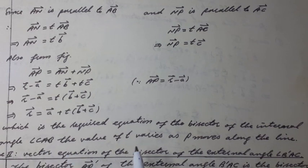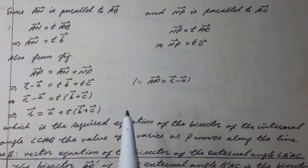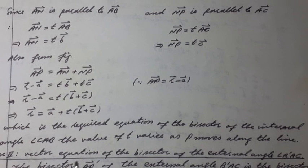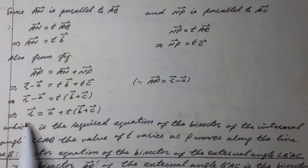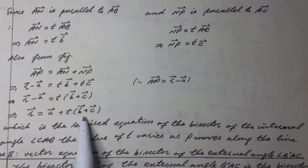The value of T varies as P moves along the line. Note: if the point of intersection A passes through the origin O, then A vector equals 0, and we have R vector equals T times (B-hat vector plus C-hat vector) only.